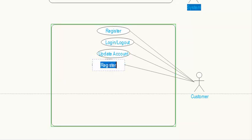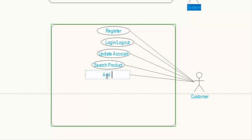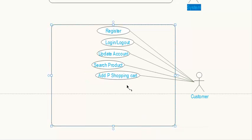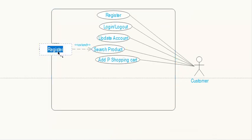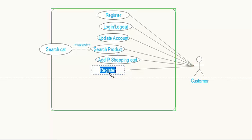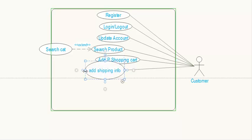The customer can search for a product. The customer can also add a product to the shopping cart. The search product use case can extend 'search in category', meaning it may also search within a product category. The customer can also add shipping information.